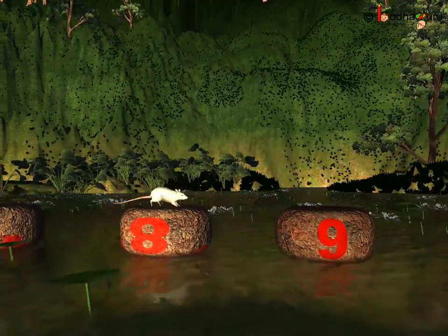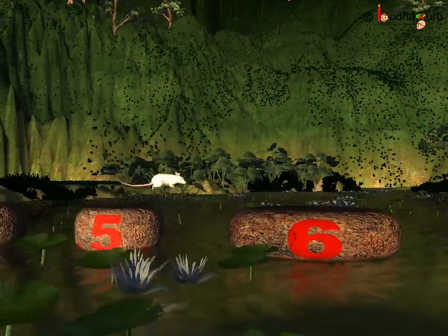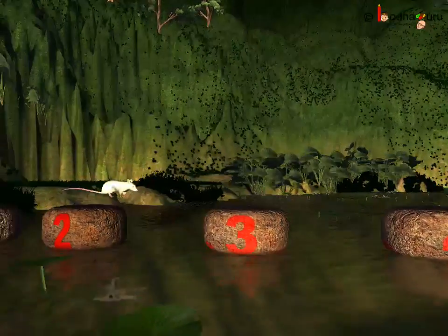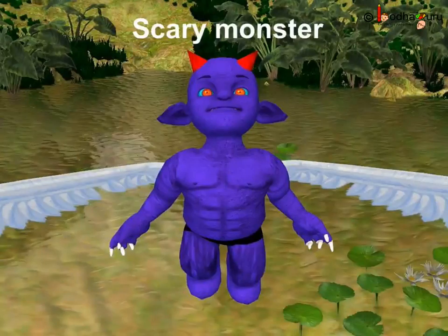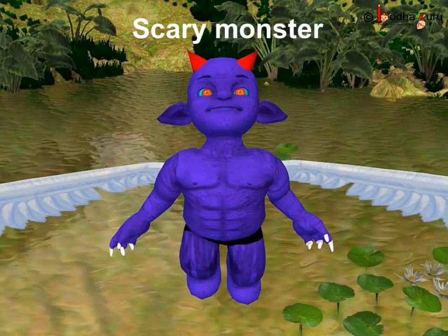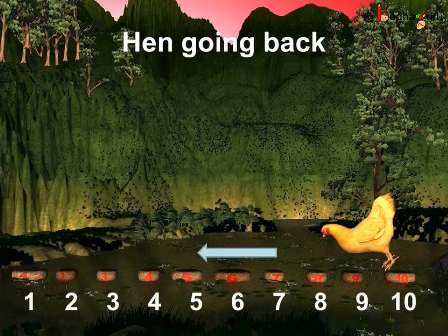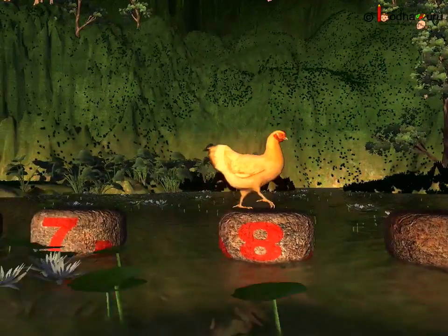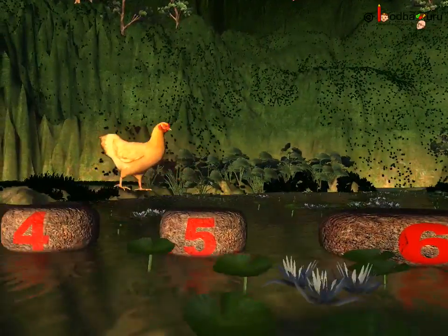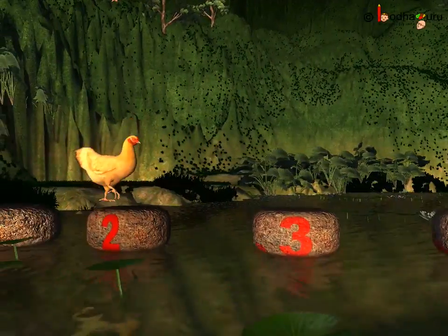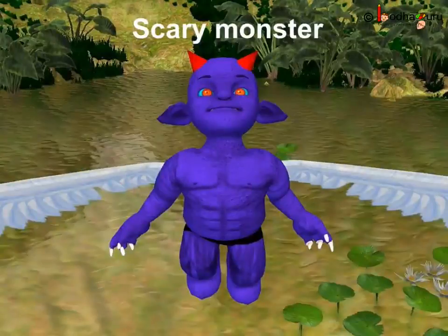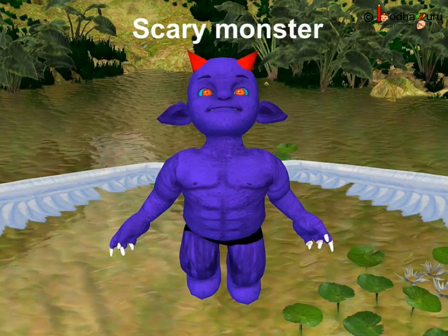10, 9, 8, 7, 6, 5, 4, 3, 2, 1. Ah, the mouse is safe from the monster. Even the hen did the same. 10, 9, 8, 7, 6, 5, 4, 3, 2, 1. Now, the hen is also safe from the blue monster.